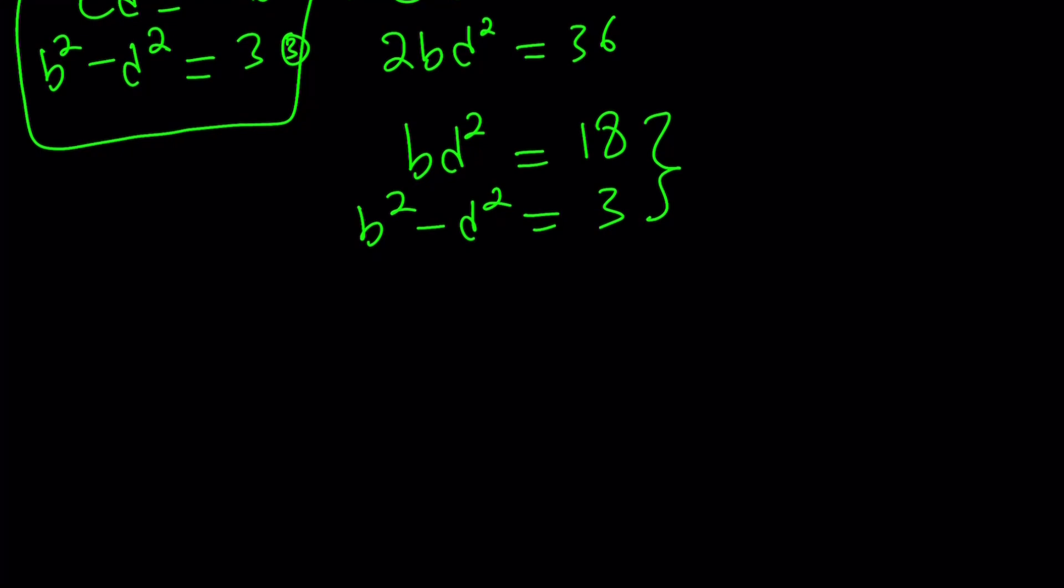Now we're going to use substitution again and end up with a single variable. How can I do that? Since there's no b squared but we have a d squared, let's go ahead and isolate d squared from here. And write d squared as b squared minus 3. Just switch the 3 and the d squared. And now you can plug it in here.